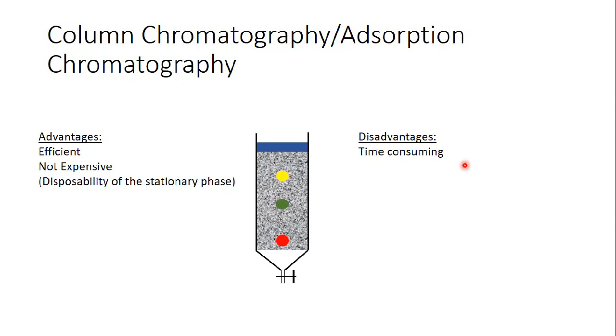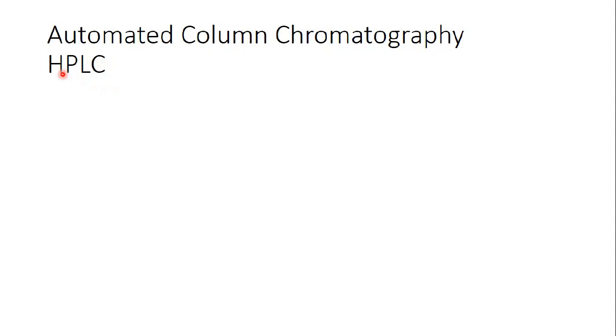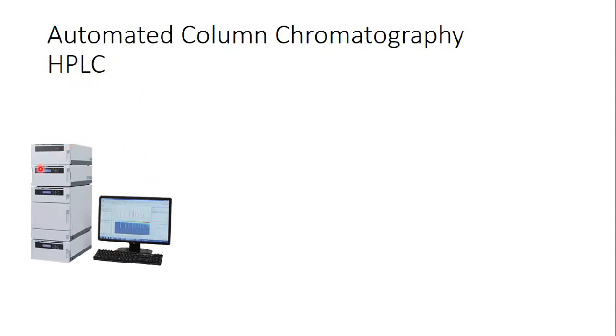Nowadays, adsorption chromatography has been automated. All of you have probably heard about HPLC, which is the high-performance liquid chromatography, or some people call it high-pressure liquid chromatography. HPLC is nothing but adsorption chromatography, but automated. Inside this machine we have different adsorption column chromatography columns, and they are connected to a computer where we can see the results.